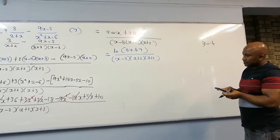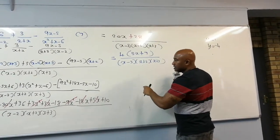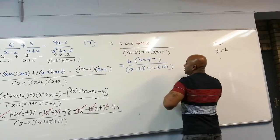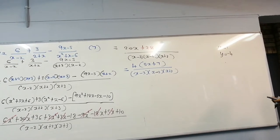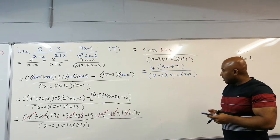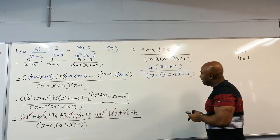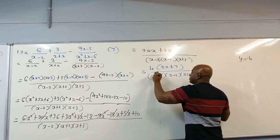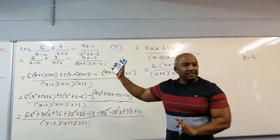Actually, looking again — the denominator factorizes as x minus 2, x plus 2, and x plus 3. When I substitute x equals 1, I get y equals minus 4. Let me try another value: when x equals 6, y equals 37 over 72.